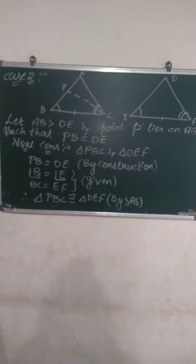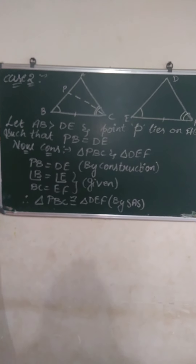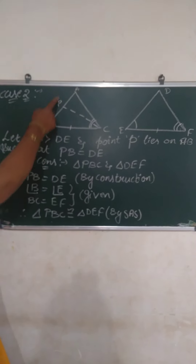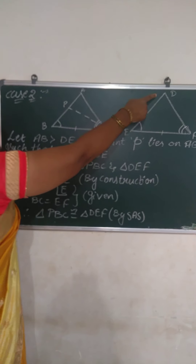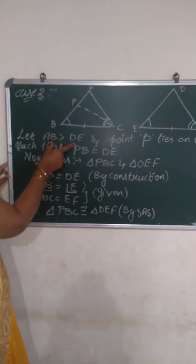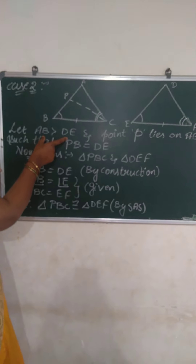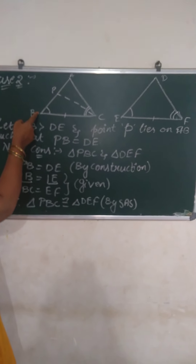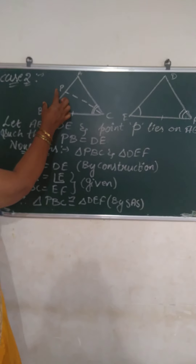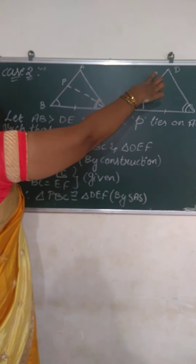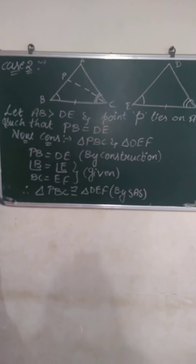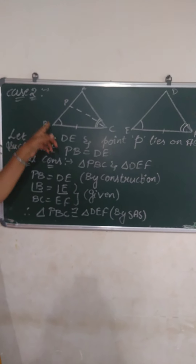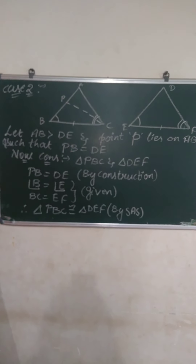Now I am going to prove using the contradiction method. I will assume AB is greater than DE. I will take one point P by construction on AB such that PB will be equal to DE. This is just an assumption, and I can prove by contradiction method that triangle ABC is congruent to triangle DEF.